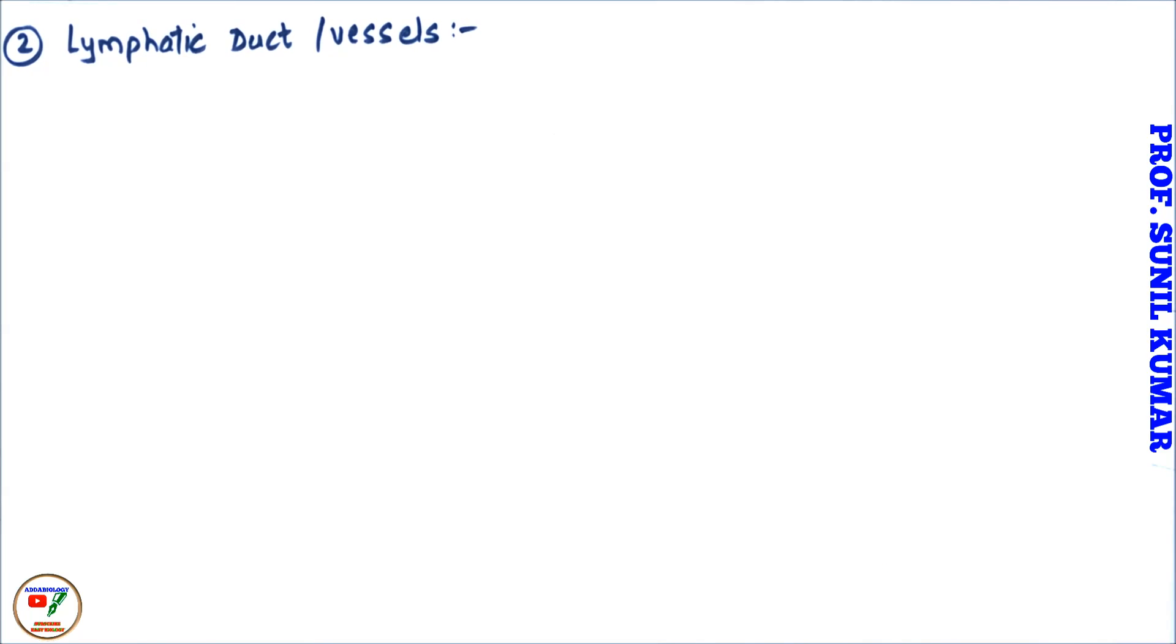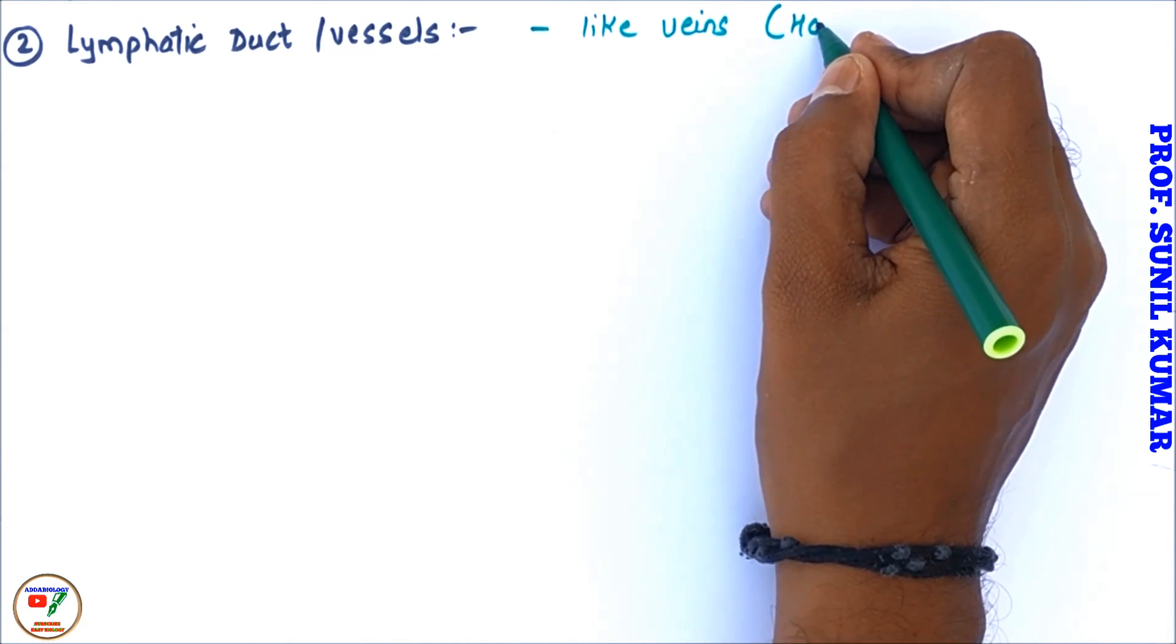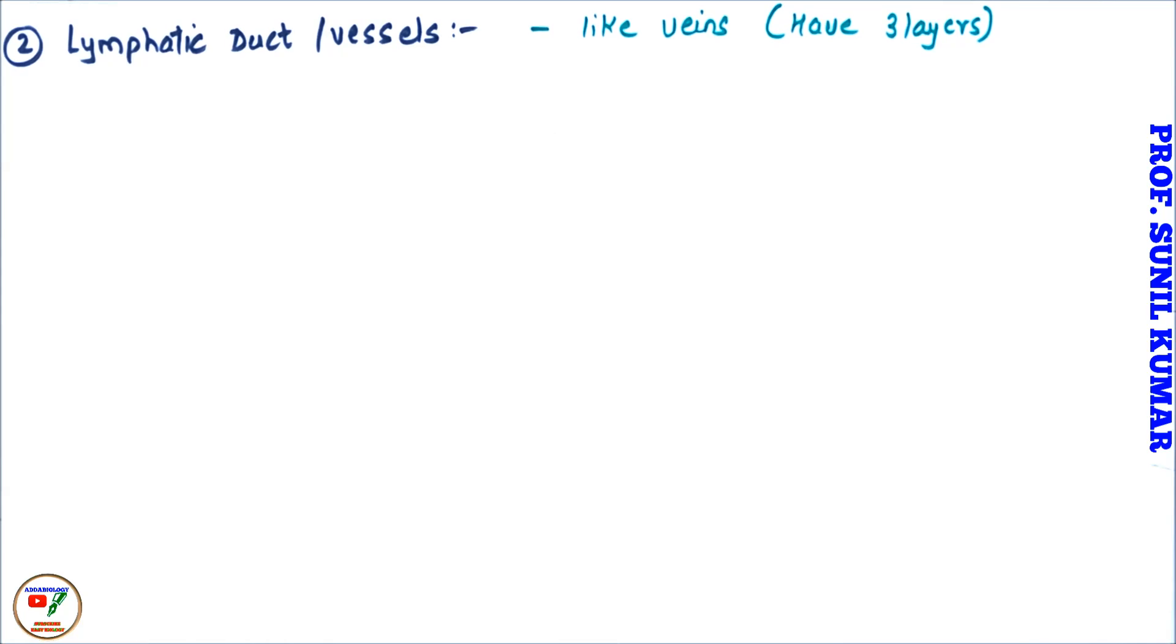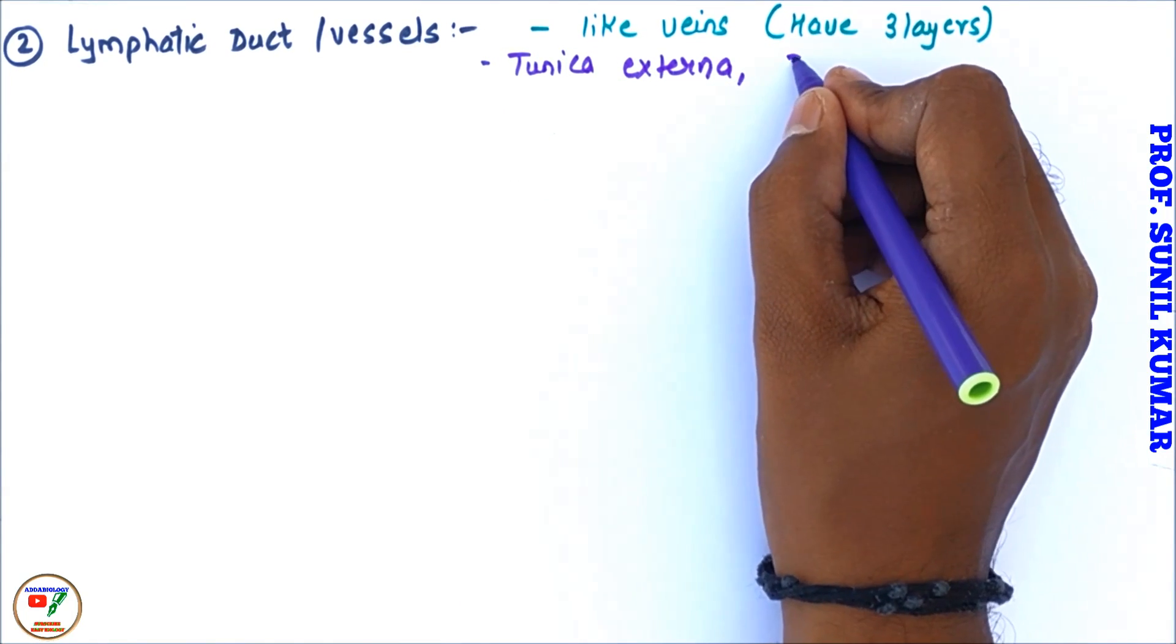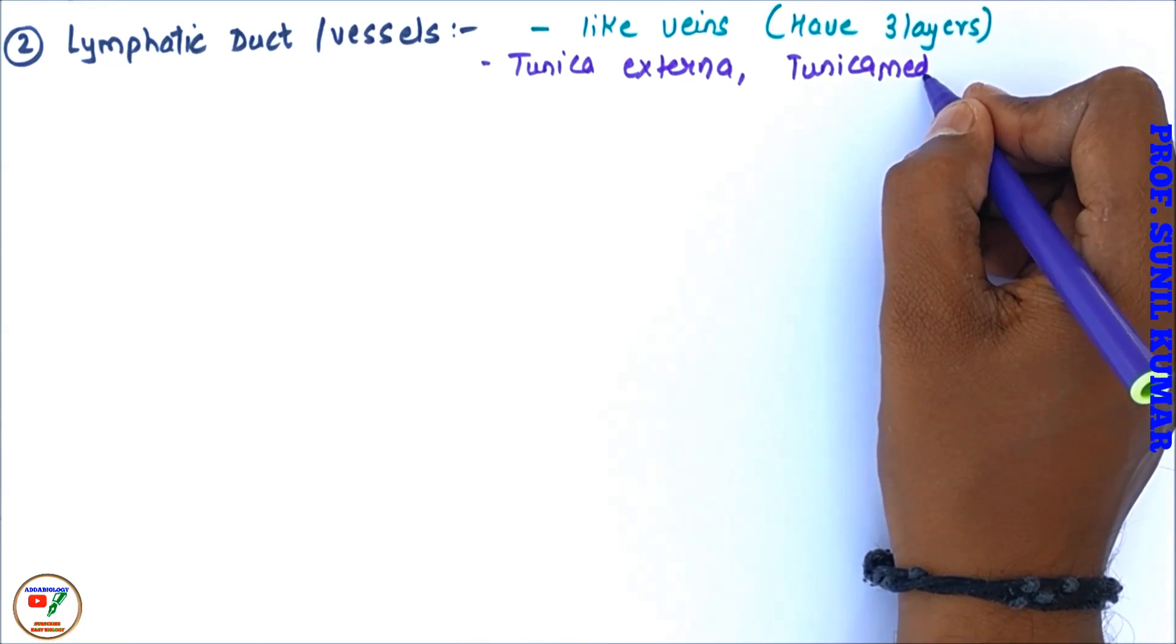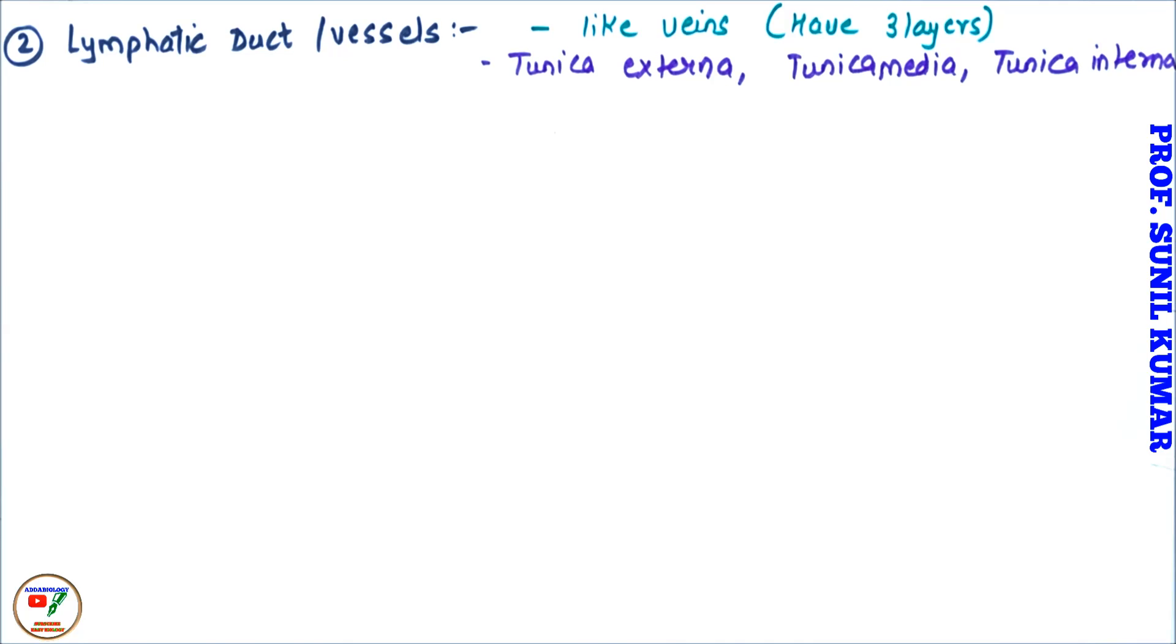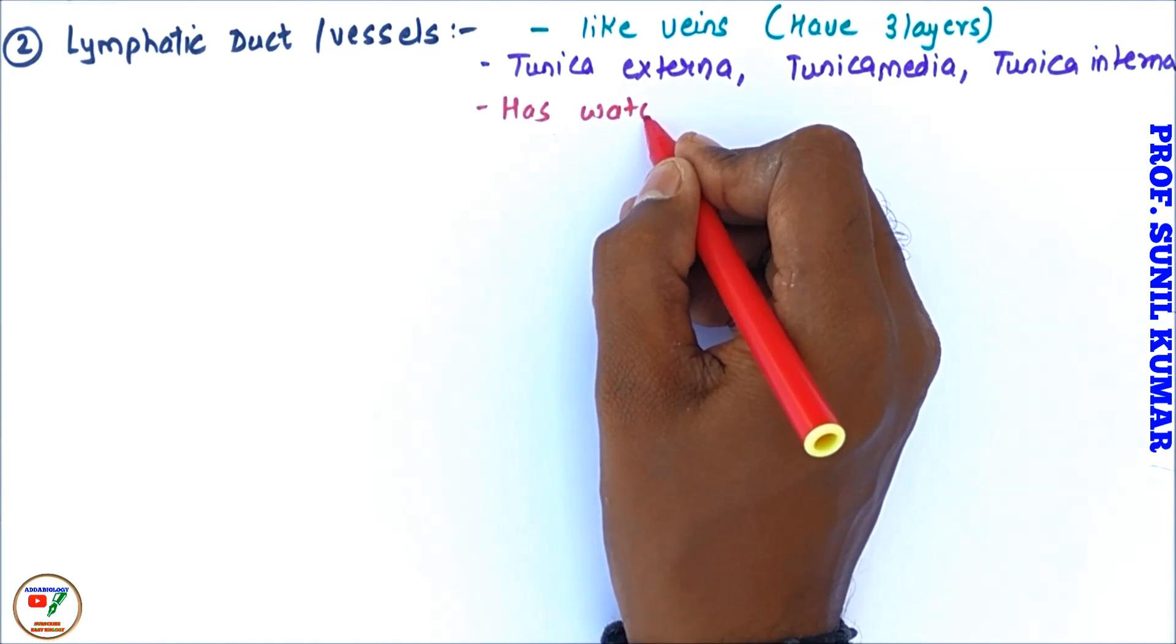Let's talk about the lymphatic duct or the vessels. So they are like veins, means they are having three layers. What are the three layers of lymphatic vessel? We say that it has outer one, middle one, and the inner one. Outer one is called tunica externa, middle one is tunica media, and the internal one is tunica interna.